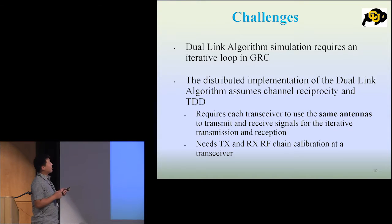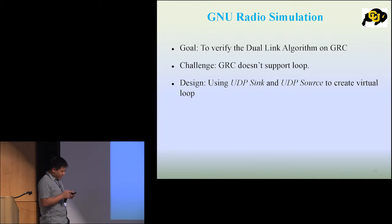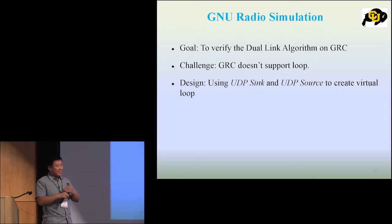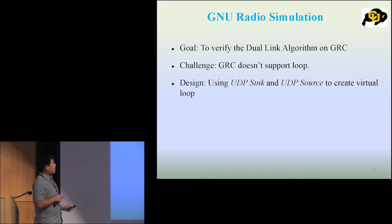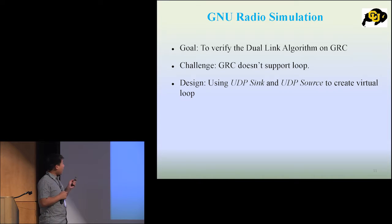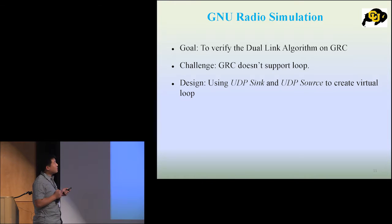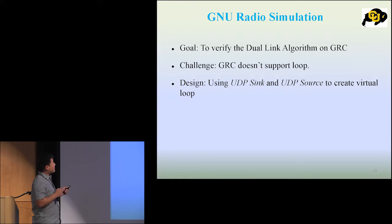We design the simulation on GNU Radio Companion to verify the algorithm. To get rid of the loop restriction, we use a UDP source and UDP sink to create the virtual loop. At the very first, we generate the initial sigma and pass it to the UDP sink. Because if we set the destination IP address of the UDP sink to the IP address of the UDP source, we can send the data from one end to the other.